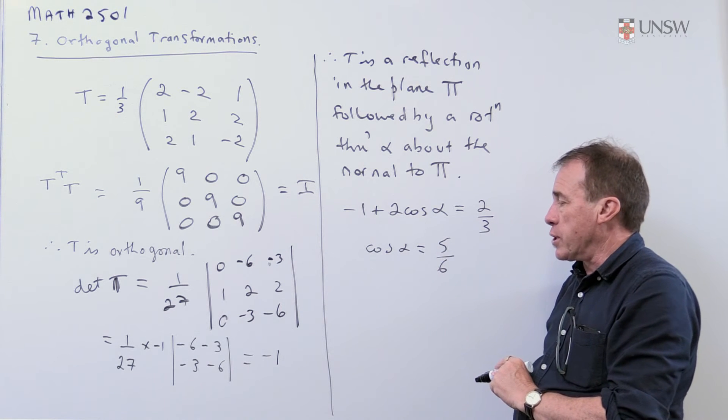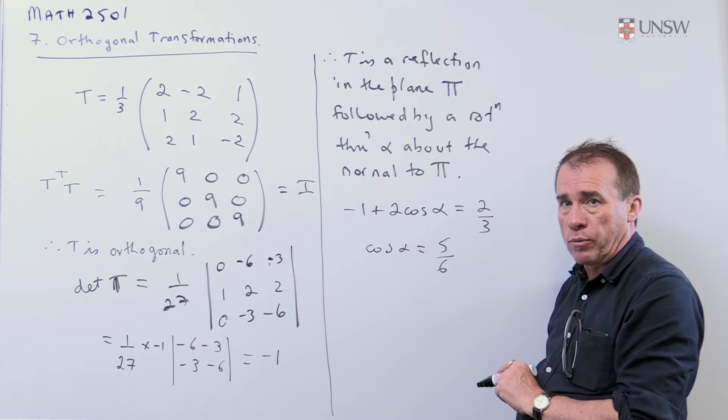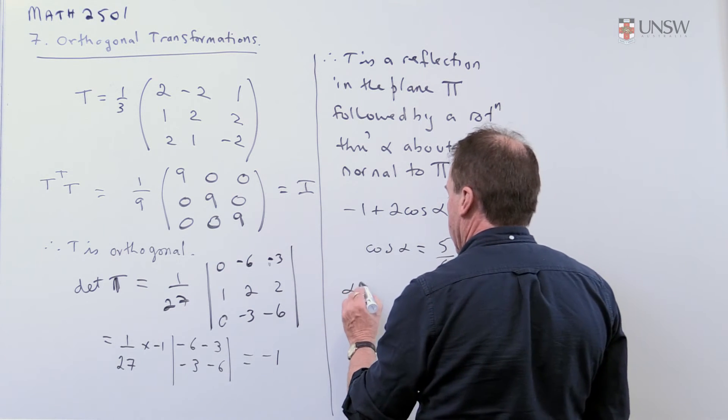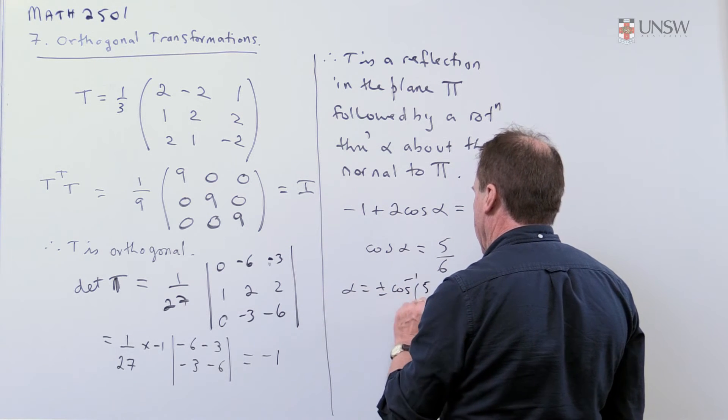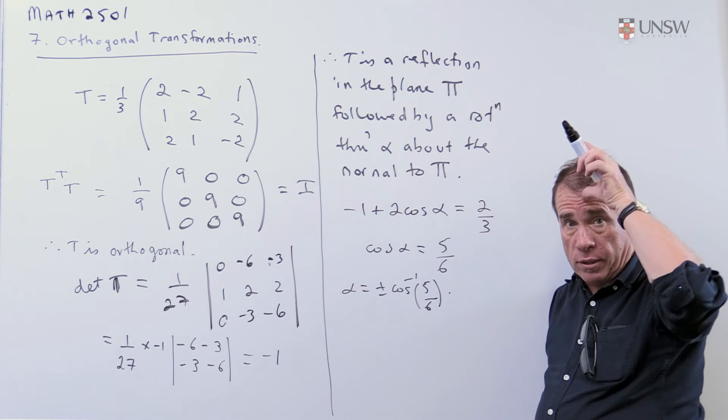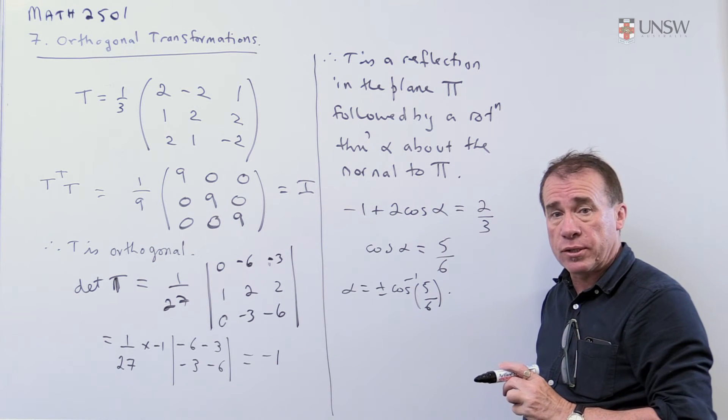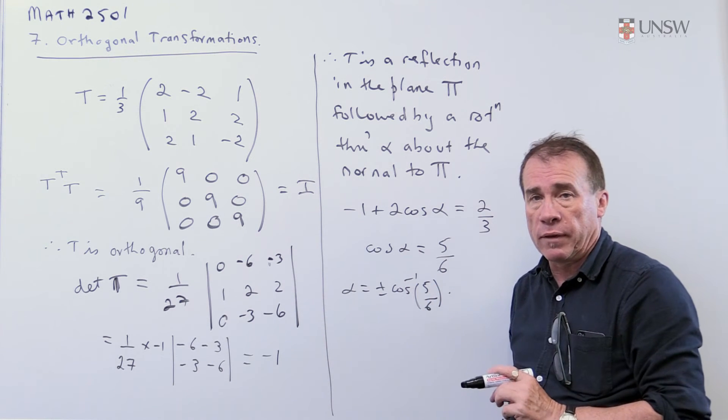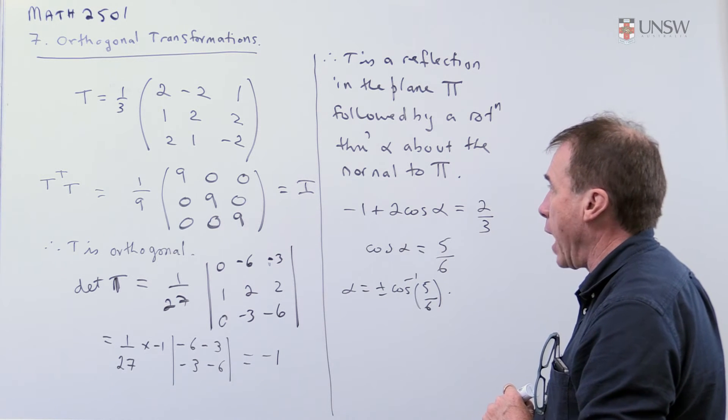Generally, we would just ask you to find the cosine of the angle because now it's ambiguous. It could be plus or minus. So alpha is plus or minus the inverse cosine of 5 sixths. And to work out which one it is is hard. And we're not going to expect you to do that. There is a trick for that you'll explain in lectures. But we generally leave it slightly ambiguous there.